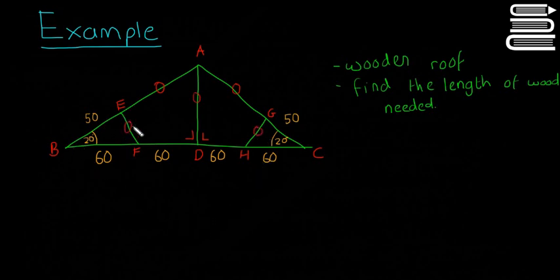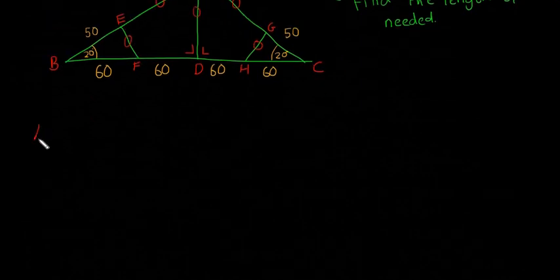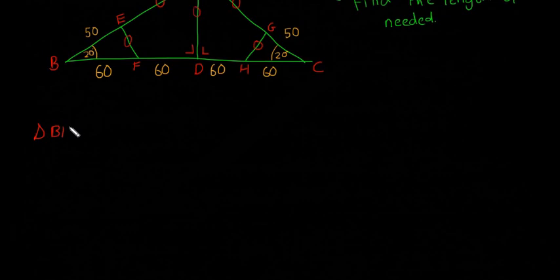And that'll just help us focus on which exactly we're going to try and do. So I'm actually going to try and do this one first, this little triangle BEF. So I'll scribble that down here - triangle BEF. And I'm going to draw it out here we go. So we have 20 degrees, we have this side is 60, this is 50, and this is the side we want. So I'm just going to call that x.